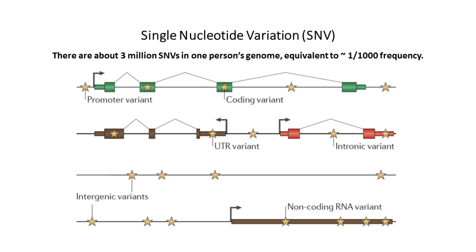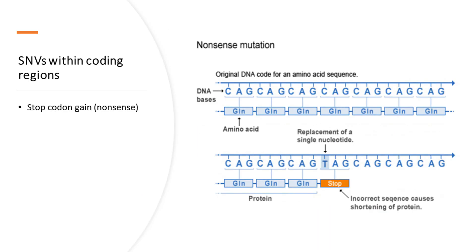At a smaller scale but with much higher frequency, there are single nucleotide variations. On average, a person's genome has about 3 million SNVs, roughly equivalent to one SNV in every one thousand nucleotides. SNVs that are known to affect functions and phenotypes the most are located in the promoter regions or protein coding regions of genes. Variations in UTR and intronic regions sometimes also affect function. Most variants are located in intergenic regions between genes, and some fall in non-coding RNA that are transcribed but not translated.